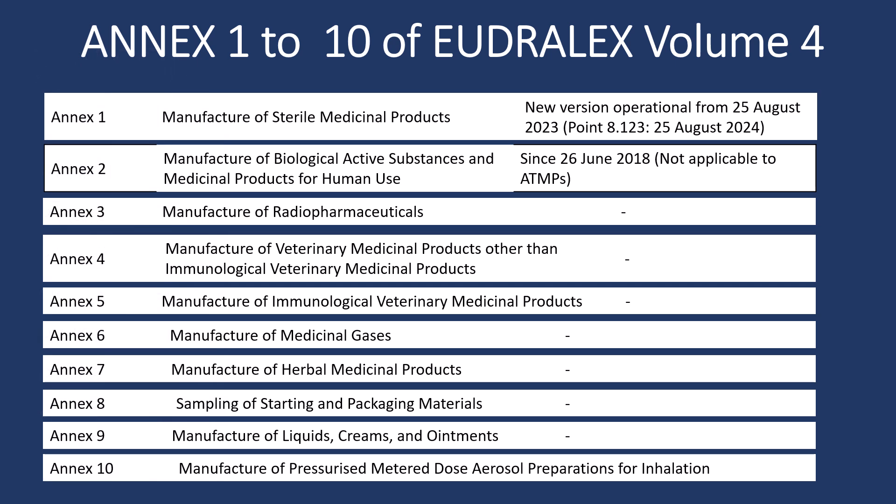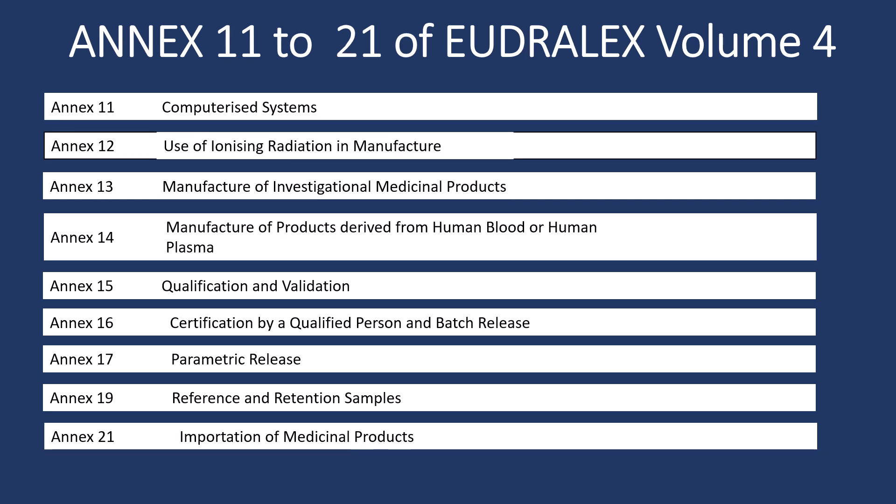EudraLex Volume 4 currently has 21 annexes. Here you can see the details of Annex 1 to 10, and here are the titles and key areas covered in Annex 11 to Annex 21.